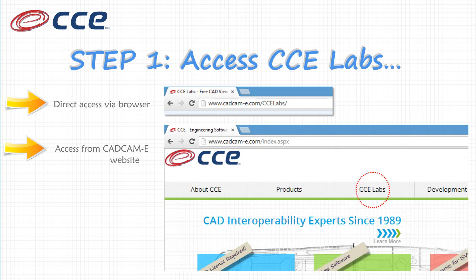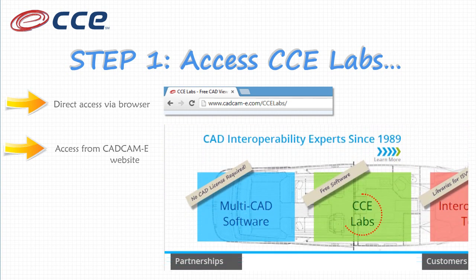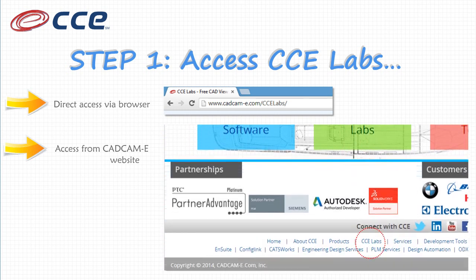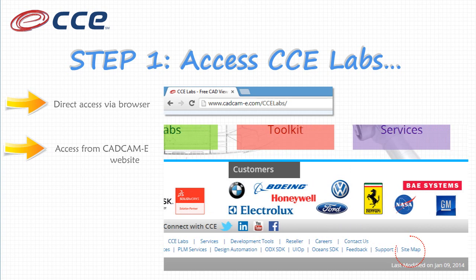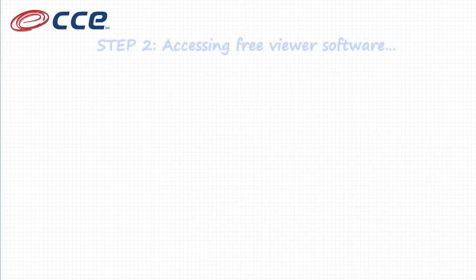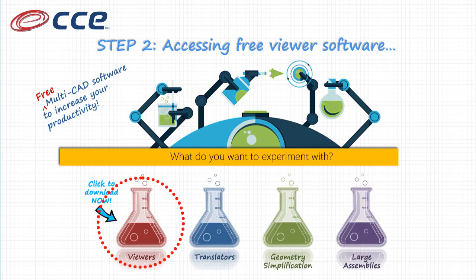Click on the tab, click on the description, or use the sitemap. To access your free viewer software, click on the category viewer from the CCE Labs page.